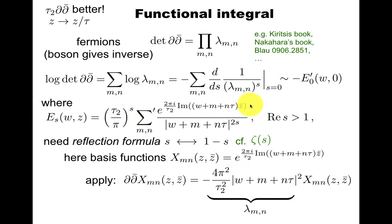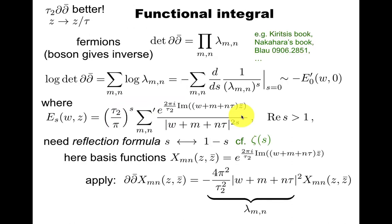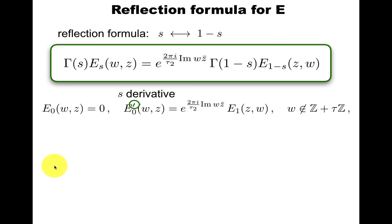Now we have this tension here that the object we're interested in has s equals 0, and we only have a representation for s greater than 1. So this is where the reflection formula comes into play. So the reflection formula for the Kronecker-Eisenstein function, this object, is this. But notice that these arguments switch here. So what had a clear interpretation as an orbital twist and a marked point on the torus are now switched.